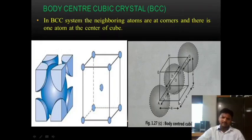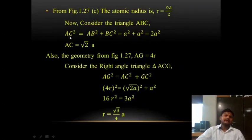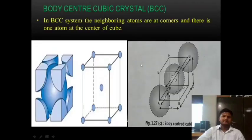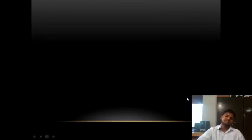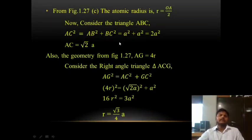In triangle ABC: AC² = AB² + BC². Here AB² = a² and BC² = a², so AC² = a² + a² = 2a², which gives AC = √2 · a.